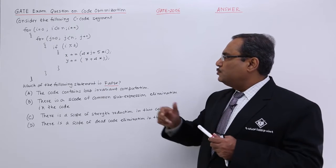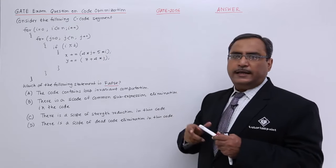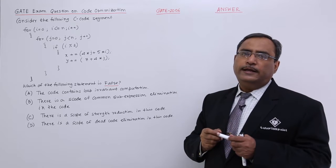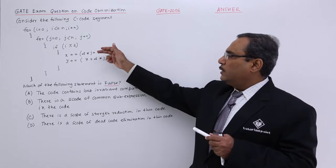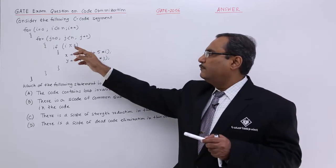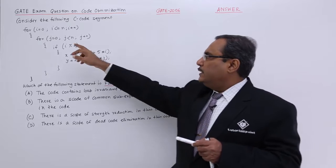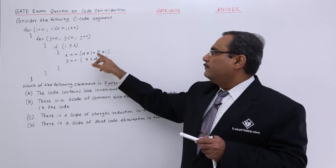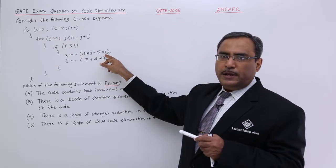i percentage 2 and 5 star i, these two are loop invariant computation. We can do that one outside of the j loop also. What is the value of i mod 2 can be done here, and value of 5 star i is also loop invariant.